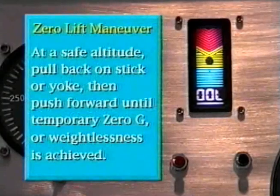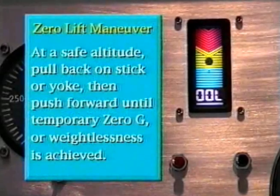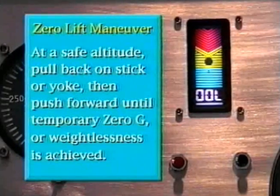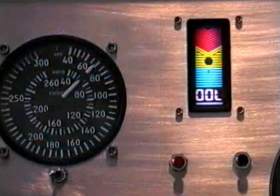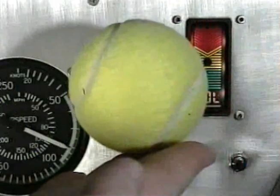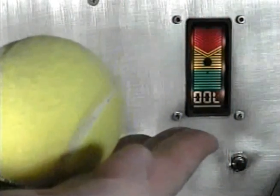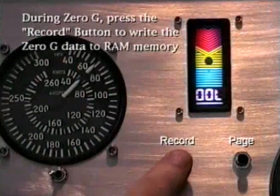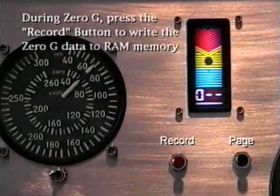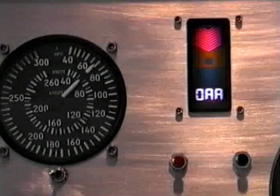This is where you will perform a zero lift maneuver by pulling back on the stick or yoke and pushing on the stick or yoke until you have achieved zero G's, or weightlessness. To do this accurately, take a tennis ball along and hold it on the palm of your hand — at zero G it'll just begin to float off your palm. At zero G, press and release the red record button to write this angle to RAM memory. Note that the professional moves to the next page.